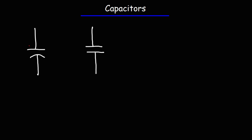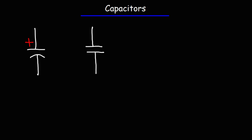On the left, what we have is a polarized capacitor, and on the right, it's a non-polarized capacitor. Polarized capacitors typically include electrolytic capacitors, and they have a much higher capacitance than non-polarized capacitors, such as the mica or the tantalum capacitors.